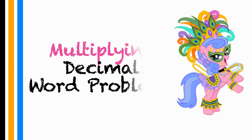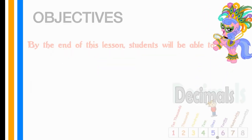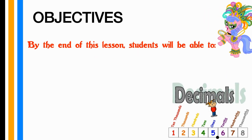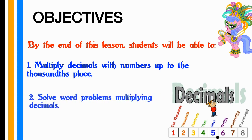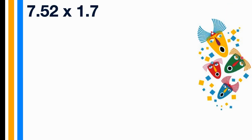Let's get ready to multiply decimal numbers in word problems. By the end of this lesson, students will be able to multiply decimals with numbers up to the thousands place and solve word problems multiplying decimals. Before we begin, let's do a quick review: what is 7 and 52 hundredths multiplied by 1 and 7 tenths?